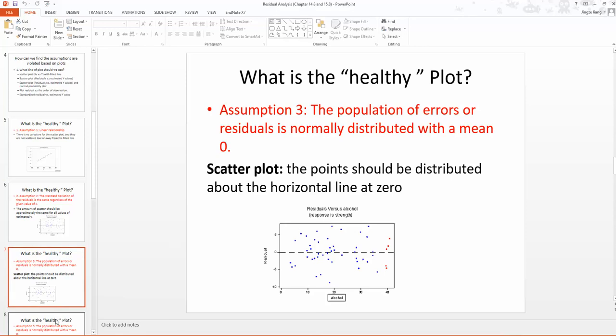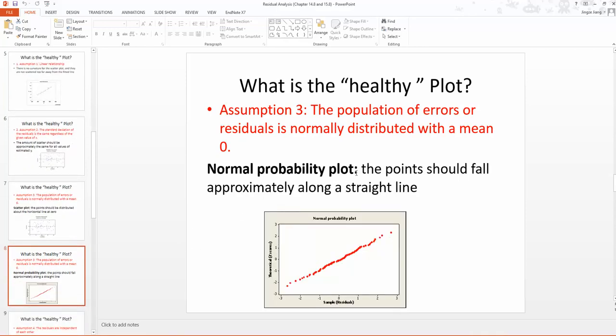The second part of assumption 3 is the normality distribution. The criterion is, if you look at a normal probability plot and the points are falling approximately along a straight line, then the normality assumption within assumption 3 is not violated.